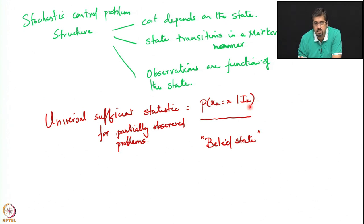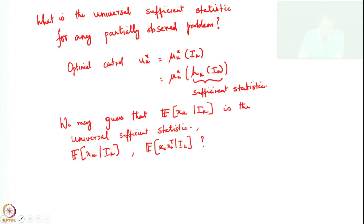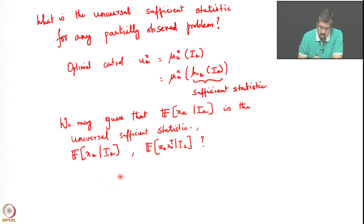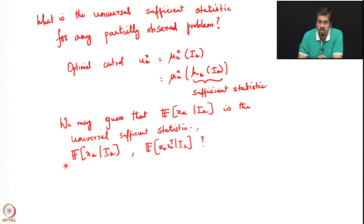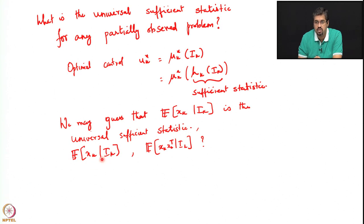However, there were specific problem classes that admitted sharper sufficient statistics. In particular, for the linear quadratic problem, the sufficient statistic was actually the conditional expectation of the state — not the full conditional distribution — but more specifically just the conditional expectation of the state given the information. The controller could be defined as a function of this particular quantity.